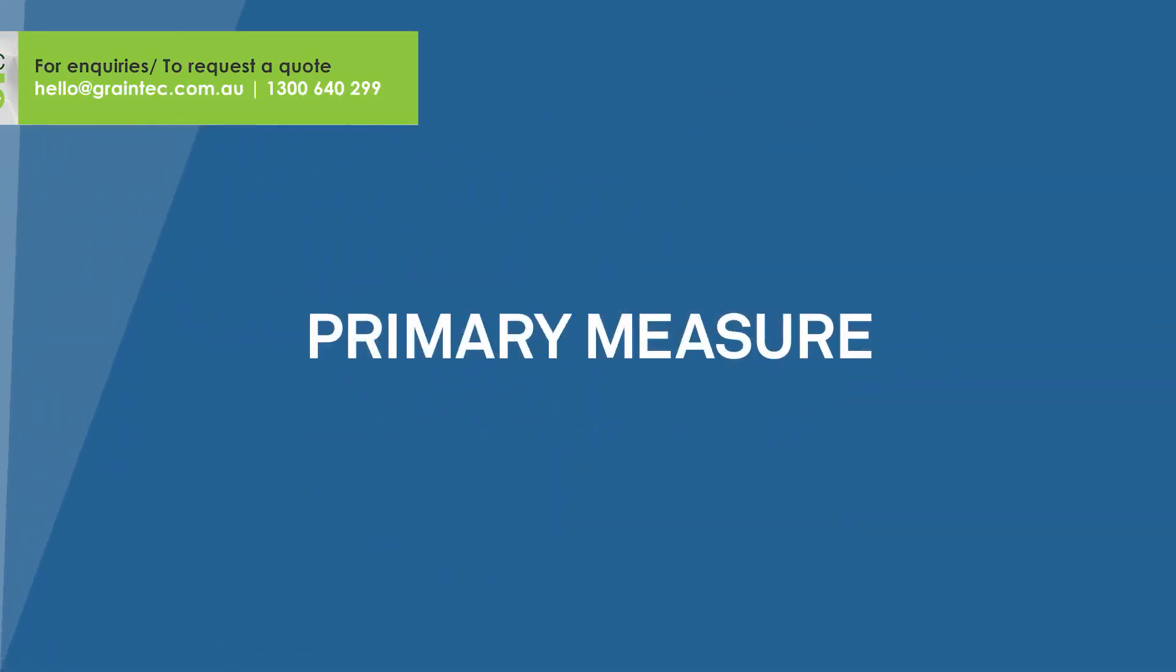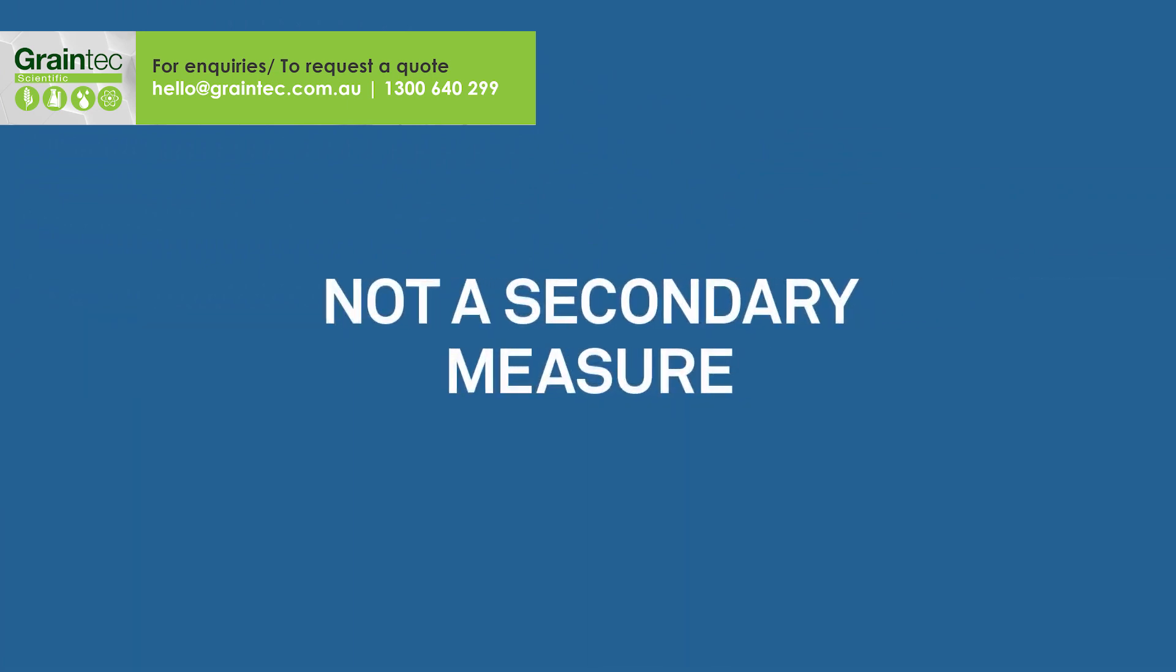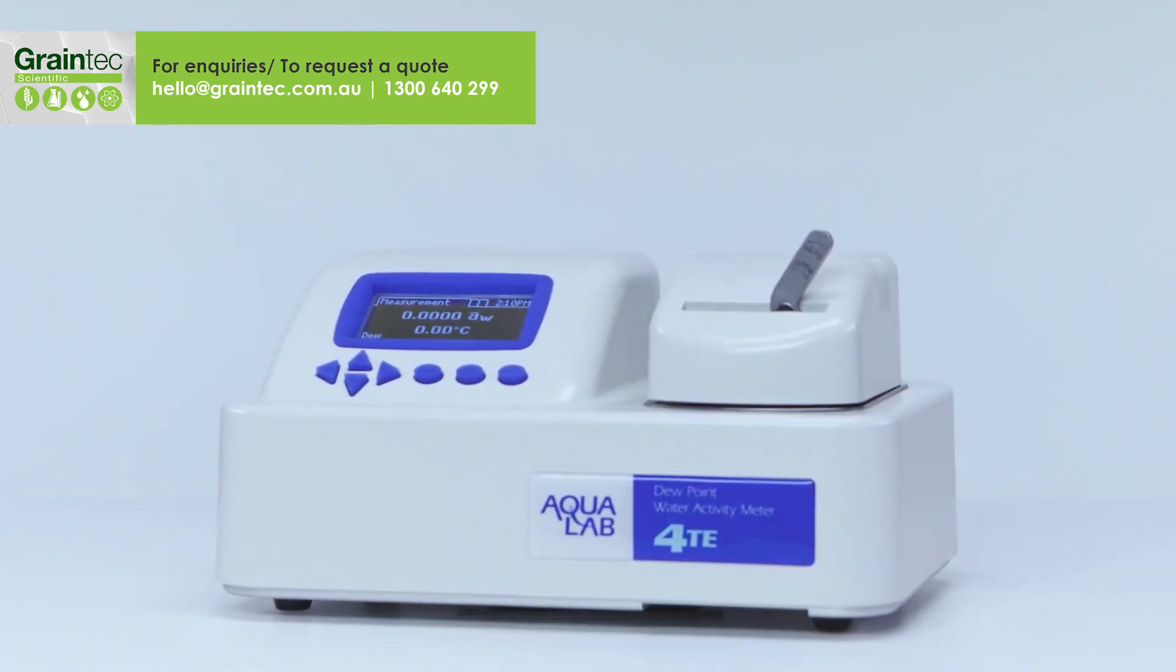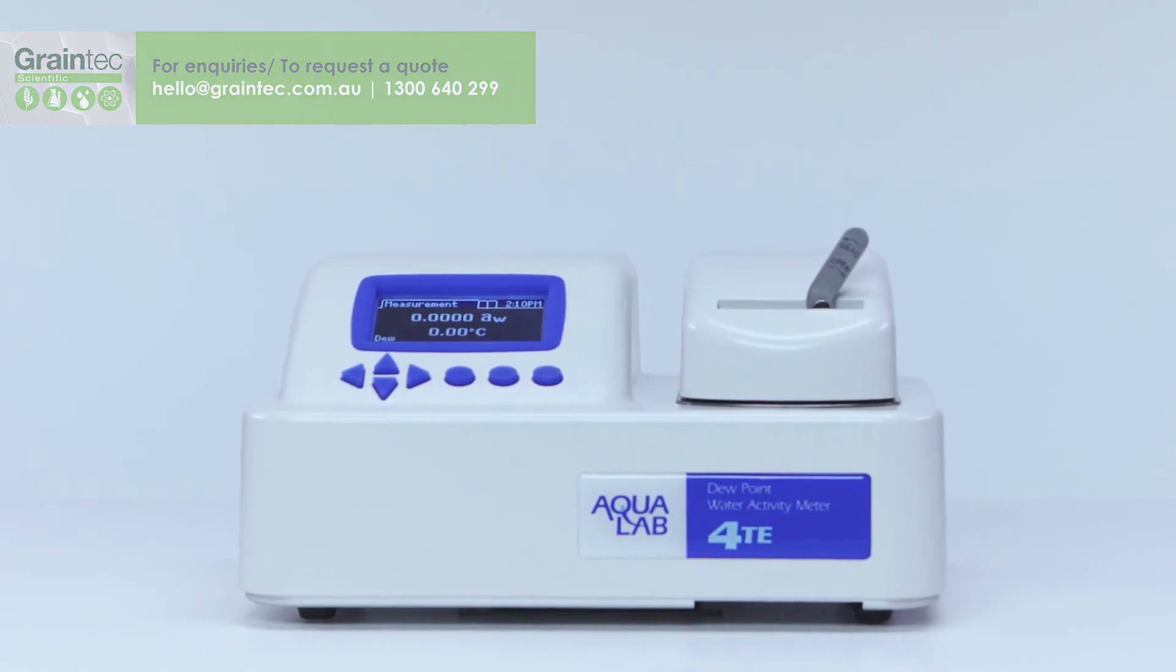You get speed plus accuracy because the Aqualab 4 TE actually measures water activity, not some secondary parameter correlated with water activity. The Aqualab 4 TE water activity meter. Speed and accuracy by measuring the real thing.